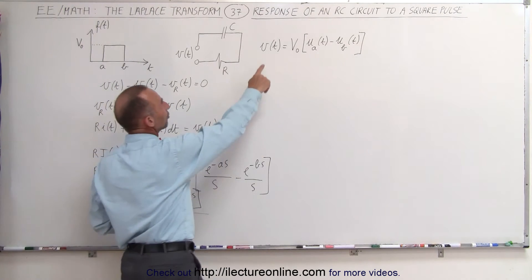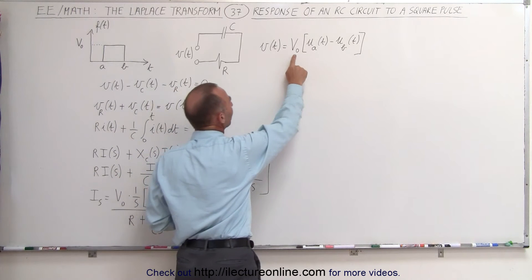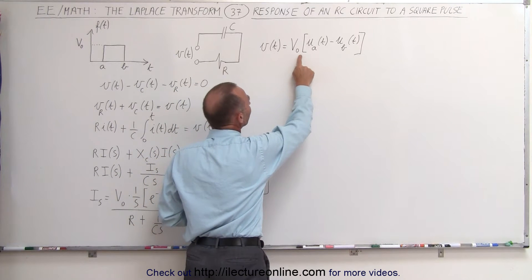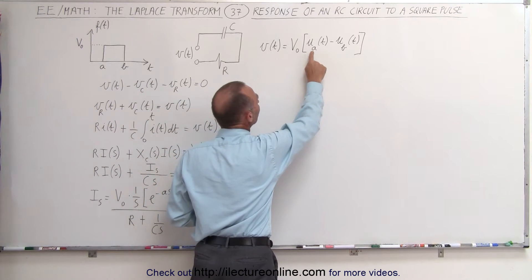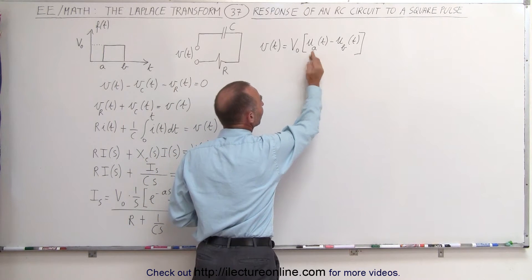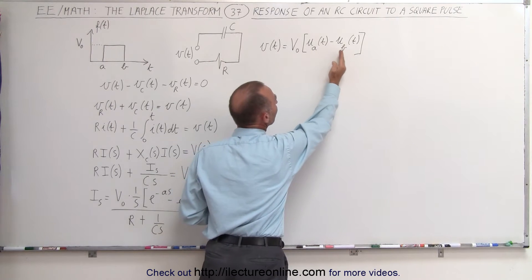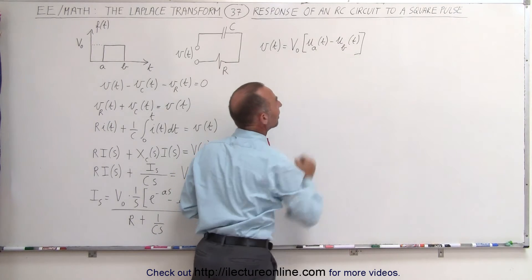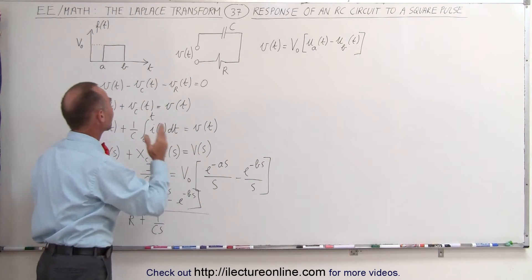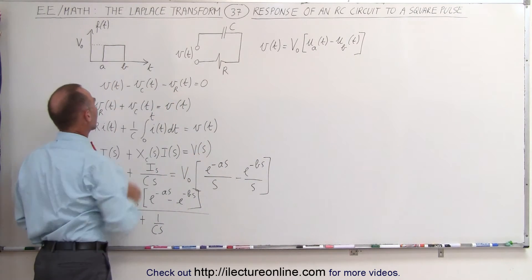The voltage input to the circuit is equal to V sub nought times U sub A — the unit step function when time equals A — minus the unit step function at time equals B, to make sure it is zero afterwards.